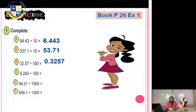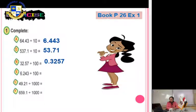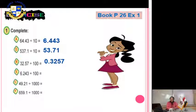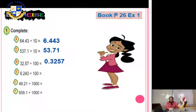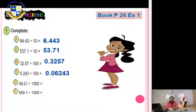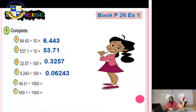Another exercise: 6.243 divided by 100. Move the decimal point 2 digits to the left — because it's division, always to the left. The answer is 0.06243.